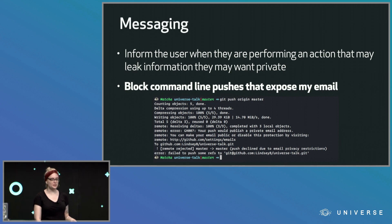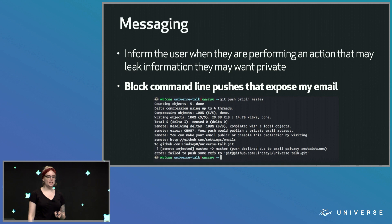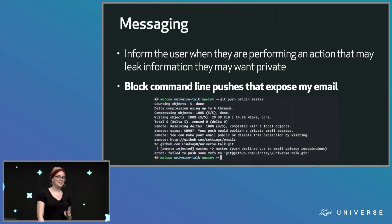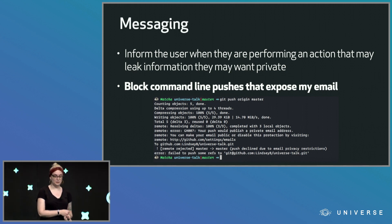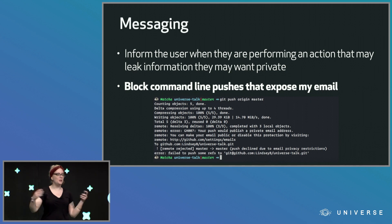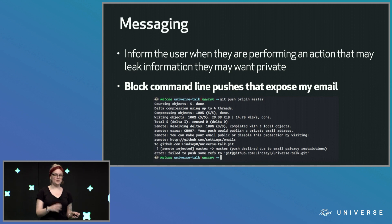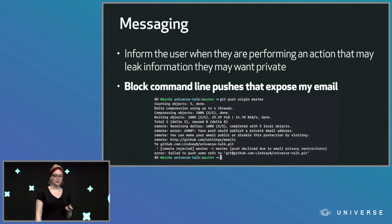Another tool we give users is messaging — informing the user when they're performing an action that may leak information they want private. This was actually my first feature I shipped at GitHub. You can enable a setting so when you push up information that contains your private email, it rejects the push. It's like: you're going to be leaking this information, you told me not to let you do that, so maybe you need to go change that commit. It's really helpful because when you're just coding and quickly do a push, you might not be thinking about your privacy at that time — and you shouldn't have to.